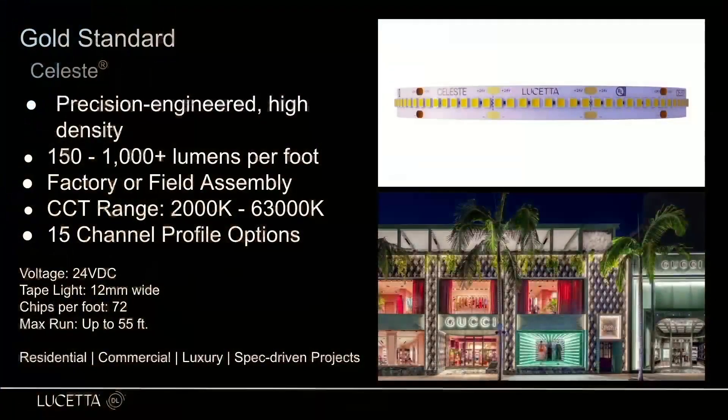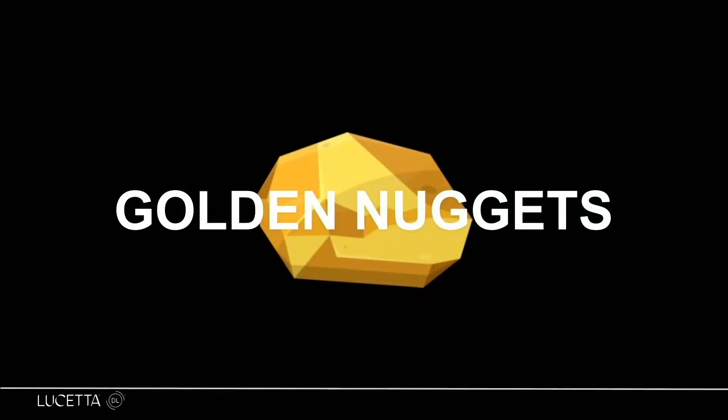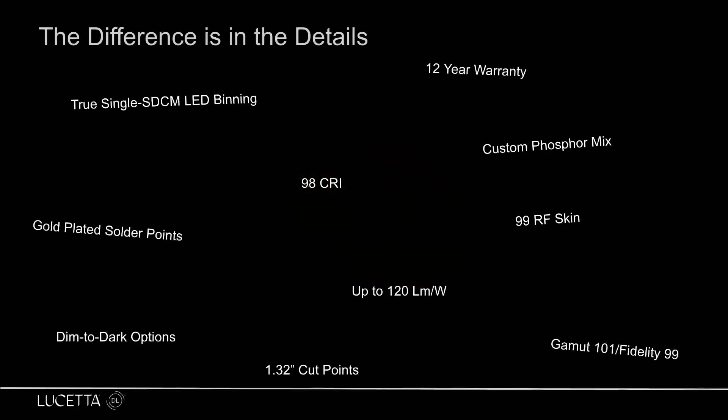All right, we'll jump back to the slides here. I wanted to talk a little bit about the differences in the details—the gold nuggets that makes Celeste different than most of the tape light options or manufacturers out there. So a few things. First we have true single SDCM LED binning. You might have heard of single binning or micro binning. These are really washed-up terms. These don't matter nearly as much anymore because even if you have a single bin, you can still have very inconsistent color shift among that actual product. For us with Celeste, this is the highest standard you can do for actually choosing your diodes—true single SDCM LED binning.